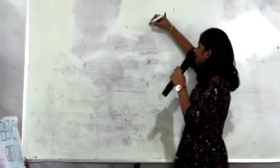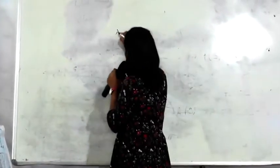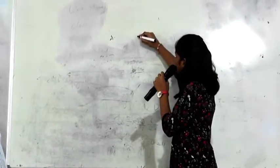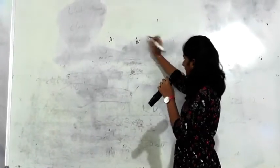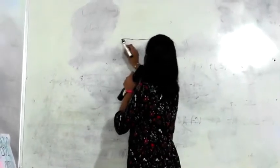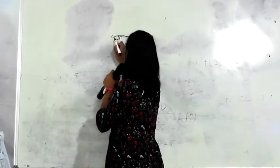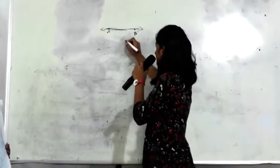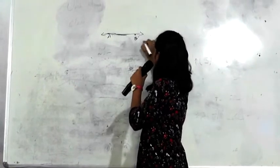This is a dot. I will name it A, and I will mark one more dot and name it B. And I will join those both points. This is a line. This is written as line AB.